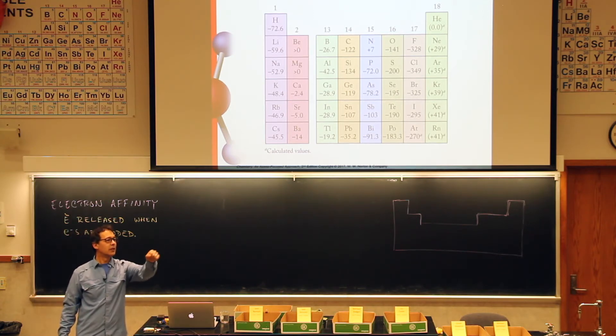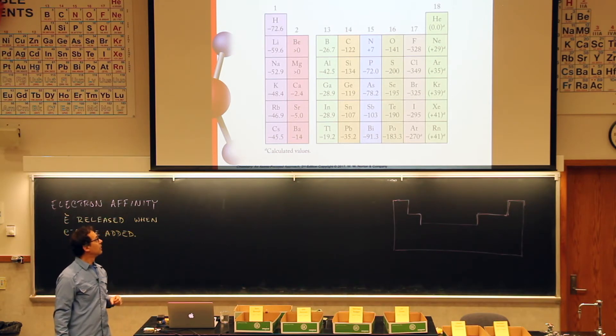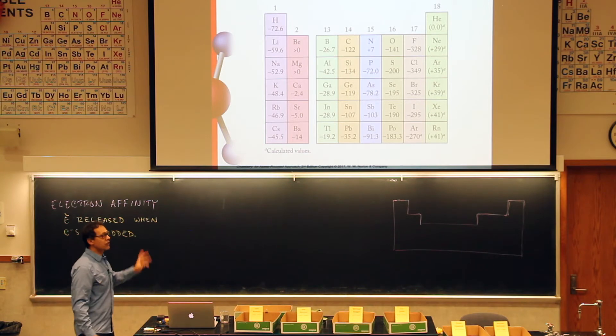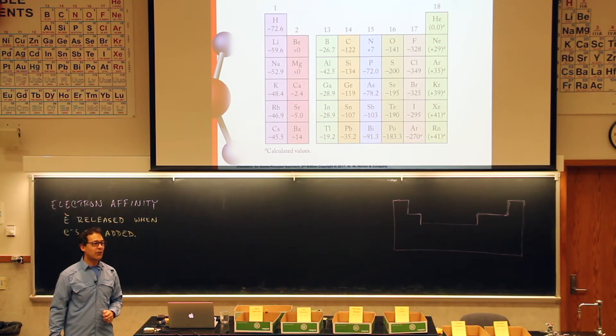The noble gases are all positive, whereas the others are negative. That means you have to pay them to take an electron. You have to add energy to get them to take an electron.